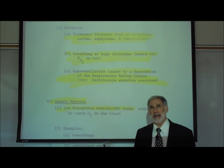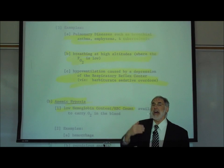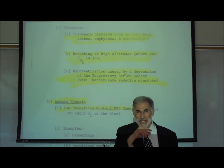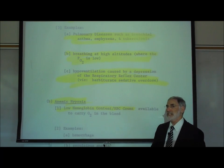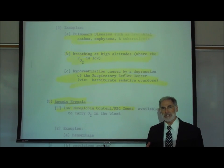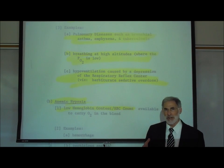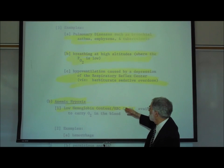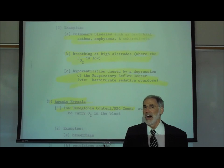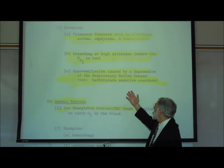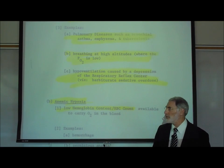A third cause of hypoxic hypoxia or hypoxemia is where the person is hypoventilating — breathing less than normal because of depression of the respiratory center. This can be caused by many CNS-depressant drugs that slow down the respiratory center, causing an abnormal decrease in breathing. This happens when people take an overdose of sleeping medication or sedatives. Also, narcotic pain relievers can depress the respiratory center, leading to this problem.